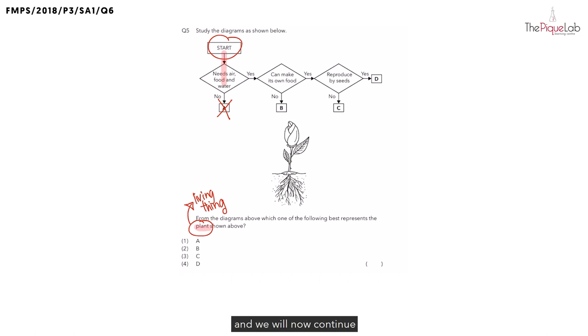Take out your highlighter again and we will now continue to trace the flowchart to figure out whether this plant is B, C or D. Since A cannot be the answer, we cannot continue to highlight down. We should now go to the right to reach the next question. The second question in the flowchart is whether the plant can make its own food. Recall what you have learned about the plant. Can the plant make its own food? The answer is yes. But can you recall specifically which plant part makes food for the plant? It is the leaves. The leaves are the part of the plant that helps the plant to make food.